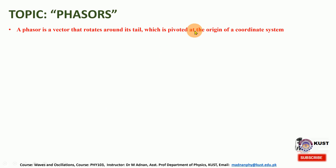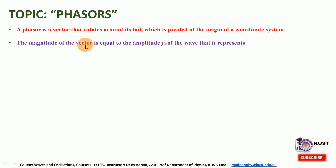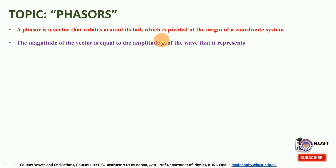With the help of the phasor, which is a vector that rotates around its tail pivoted at the origin of a coordinate system, we can add phasors to get the resultant waves. Those vectors do not require to have the same length — by length I mean the same displacements. The magnitude of the vector, which is the phasor, is equal to the amplitude ym. In this situation it is not required that the two amplitudes — y1m for the first wave and y2m for the second wave — be equal.